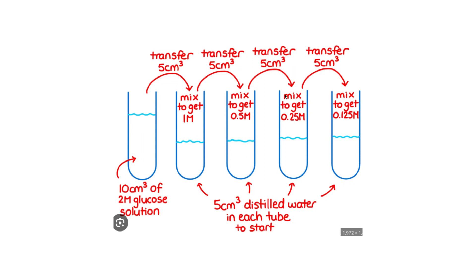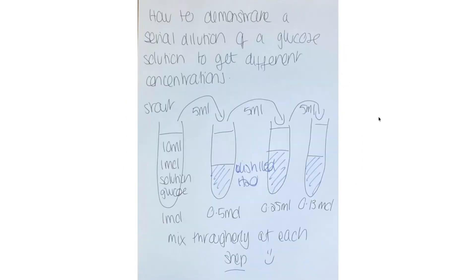Take 5 out again and mix again with 5cm cubed of distilled water to get 0.25 mol, and so on and so forth. It's really, really important that you say mix thoroughly at each step. This is a diagram that I've done, albeit not as neat, still showing the same kind of thing.